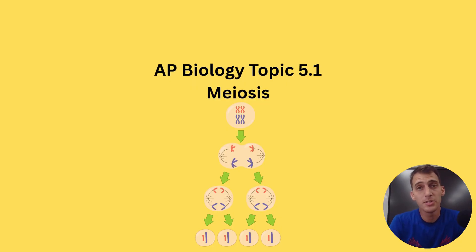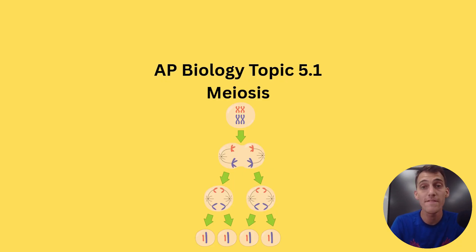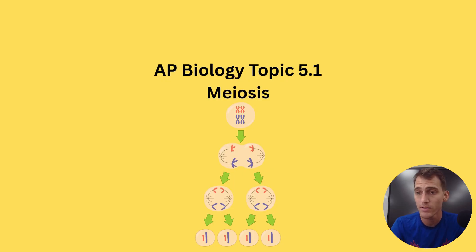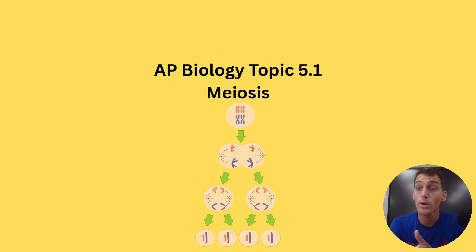Hi everybody, it's your AP Biology teacher Mr. Poser. Today we are starting unit 5 which is on heredity in the AP Biology curriculum, getting into topic 5.1 which is on meiosis. As you may be able to tell based on the graphic in front of you, meiosis is a type of cell division — we talked a bit about cell division in our last unit, covering the cell cycle and mitosis.